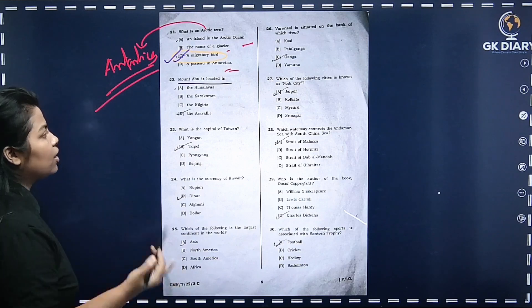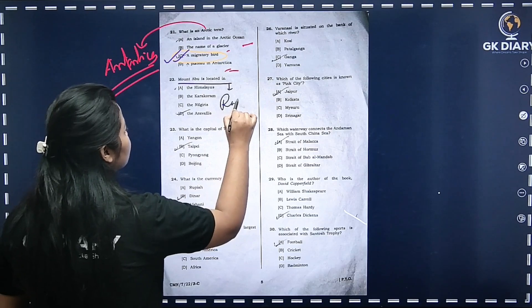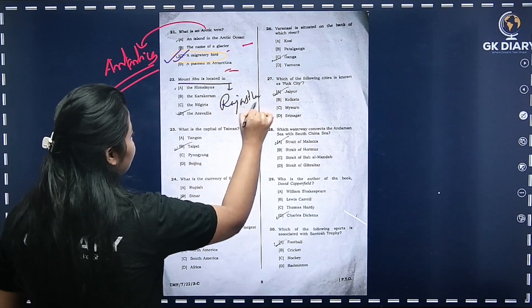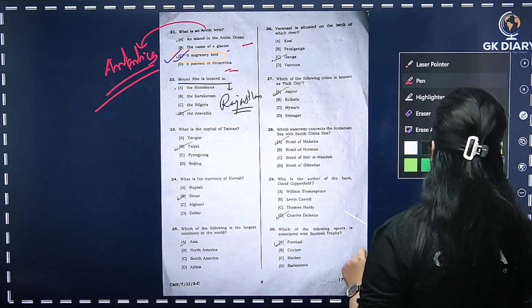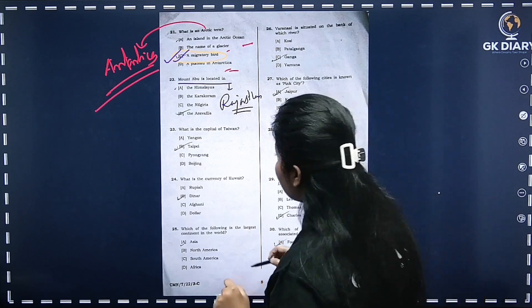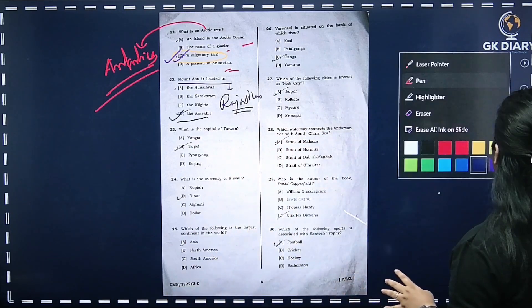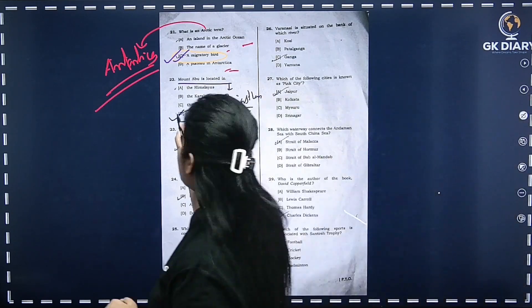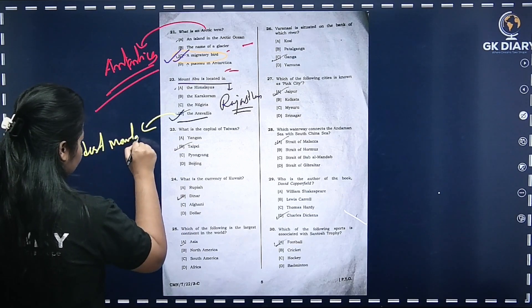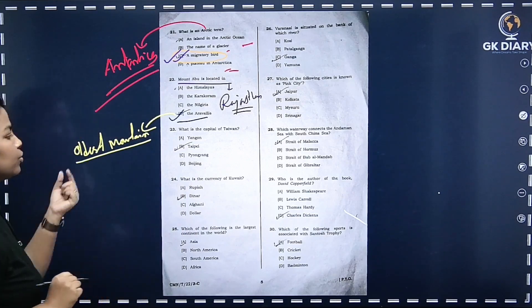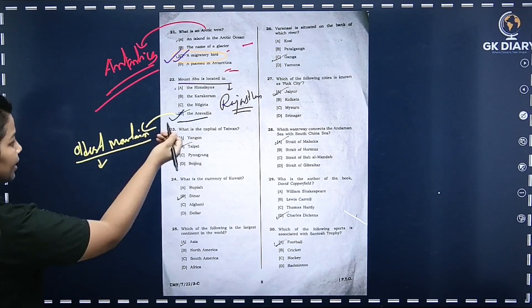Next question: Mount Abu is located where? Mount Abu is located in Rajasthan. The correct option is D. Because of this, I am going to ask: What is the oldest mountain? This mountain is the most important. Mount Abu is in Rajasthan and is related to the oldest mountain range discussion.